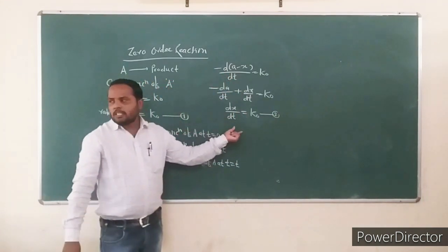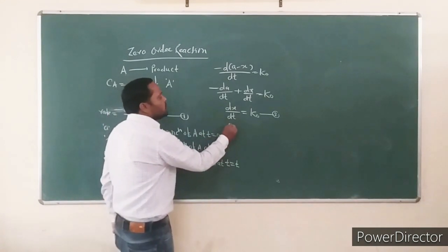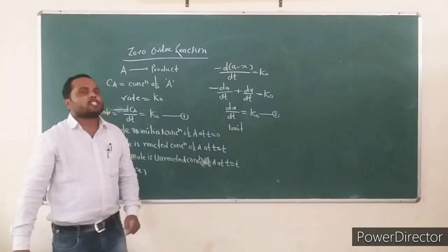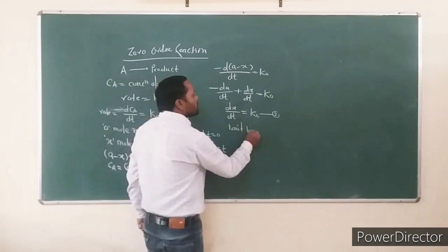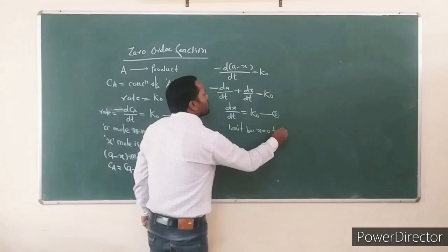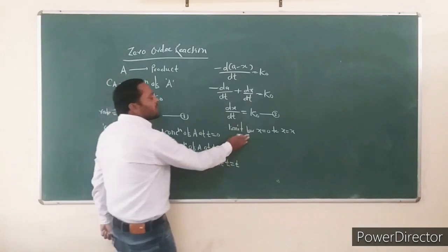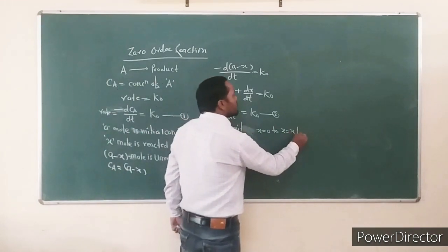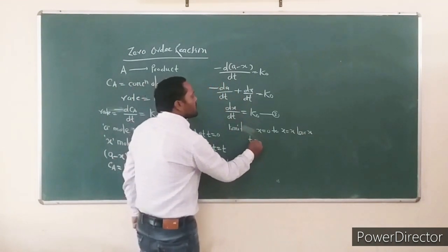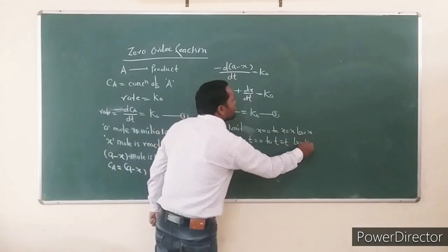We integrate equation 2 between the limits: for concentration, X from X equals 0 to X equals X; and for time, T from T equals 0 to T equals T.